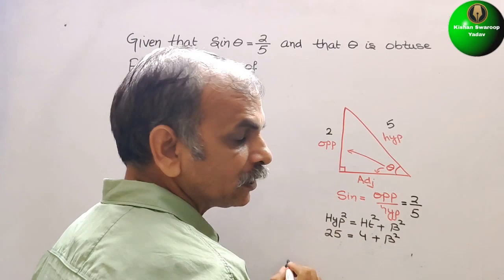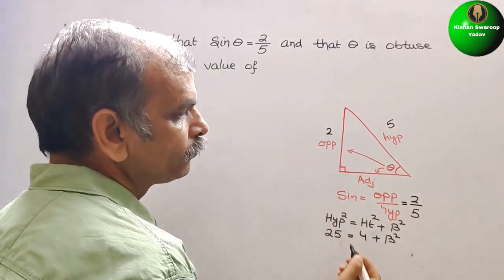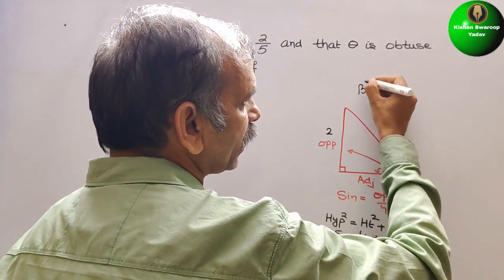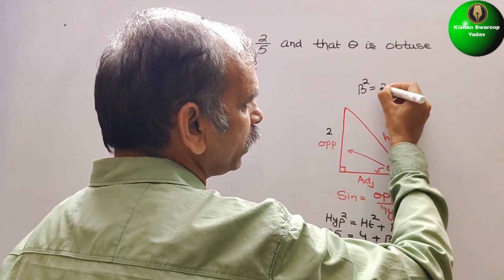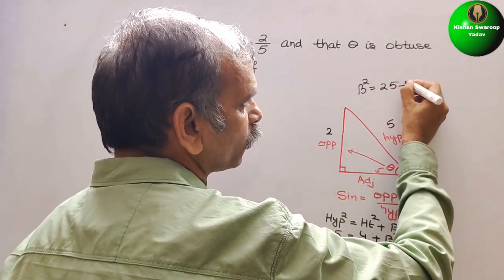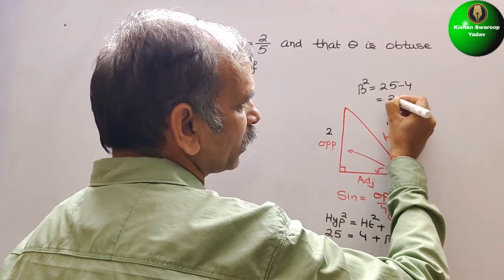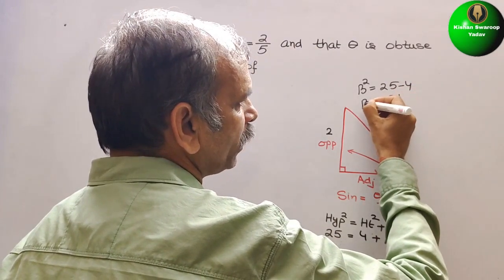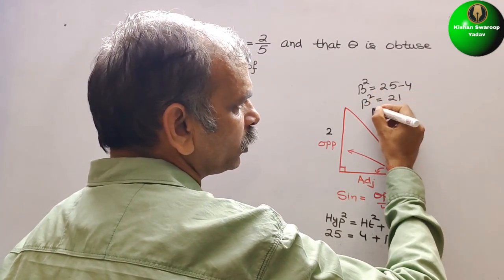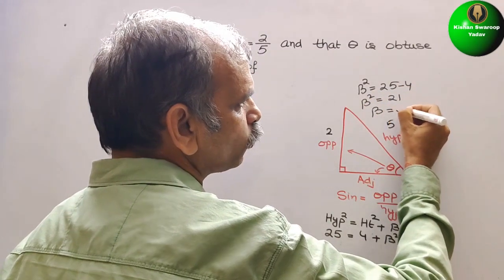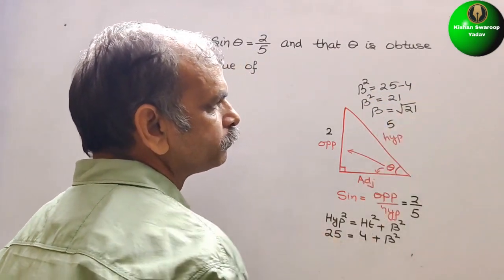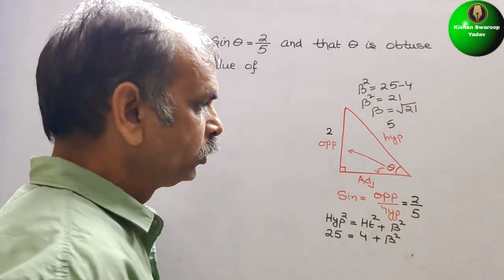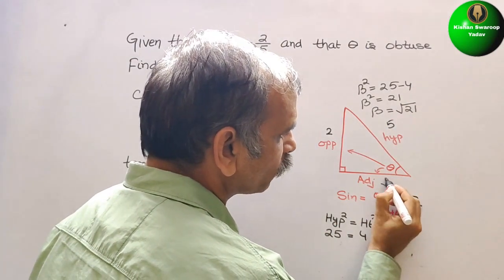So now, what is the base square? So simply we can say, base square is equal to 25 minus 4, that is 21. So base square is 21, so what is your base? Base is root over 21. So this will become root over 21.